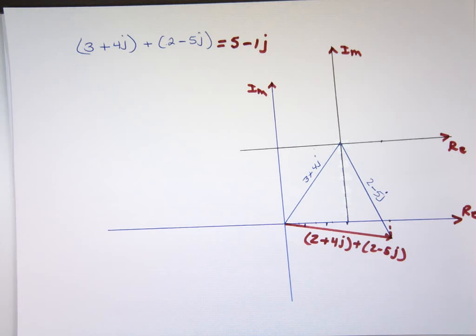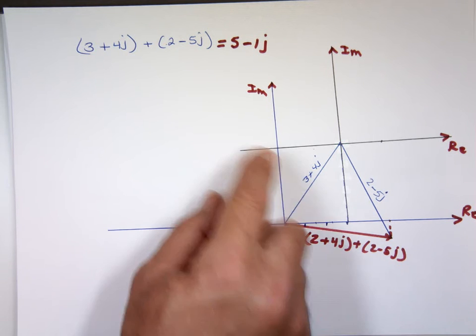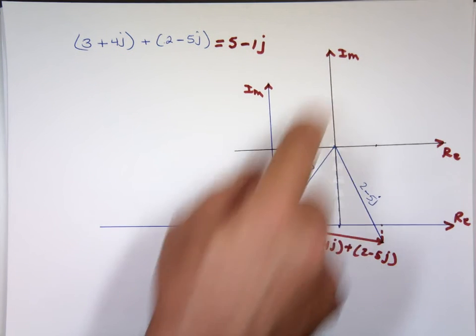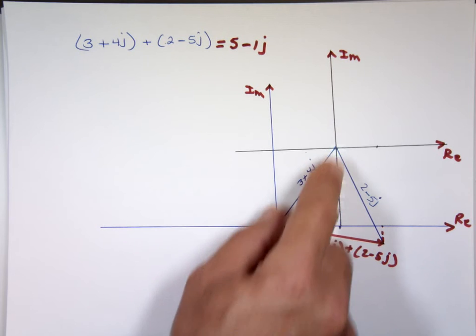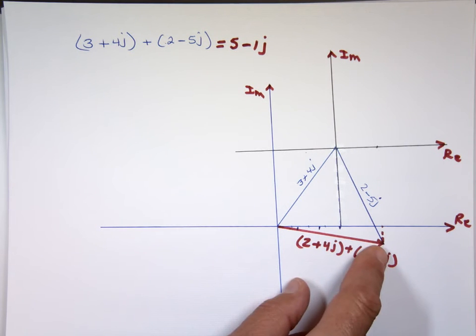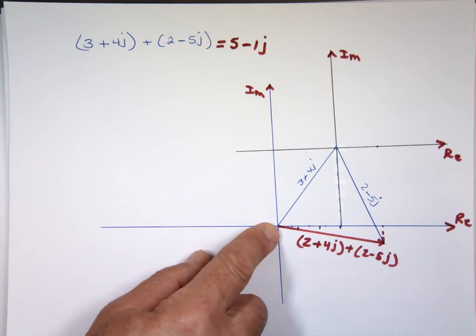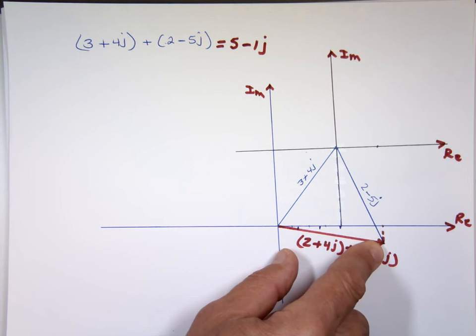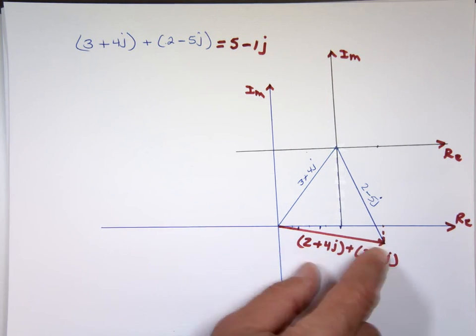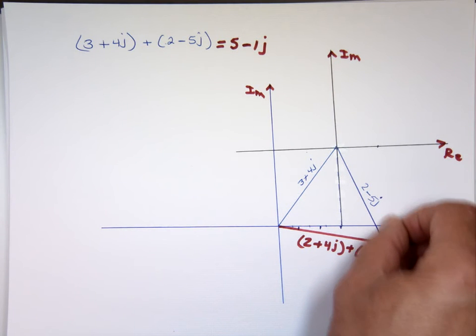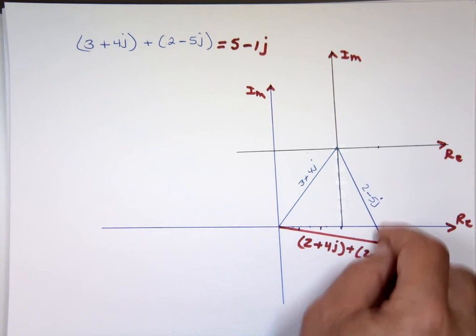Notice from the tip of this, I do another x and y-axis. And I go 2 to the right and 5 down. And that's what this one is. So the result is going to be from the origin to the tip of the last one or the end of the last one. That's the result vector. What is the x component? That's the real portion. What's the y component? That's the imaginary portion.